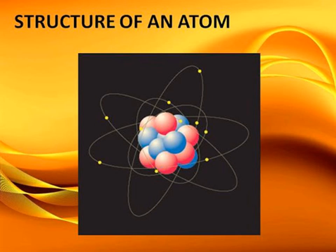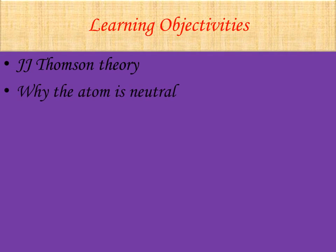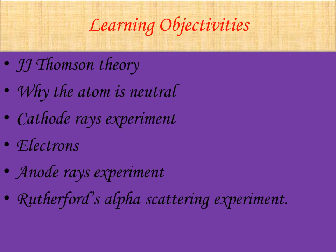We came to know about the theory of John Dalton. Now let us continue with this chapter. In this session we are going to learn about J.J. Thompson's theory, and why the atom is neutral, about the cathode ray experiment and electrons, then the anode ray experiment, and next Rutherford's alpha scattering experiment. Come, we will enter into the world of J.J. Thompson.